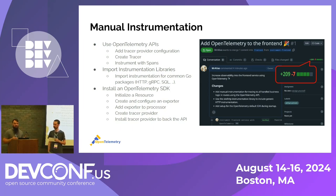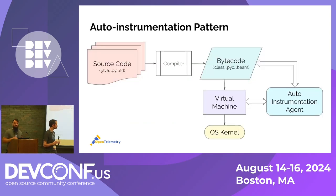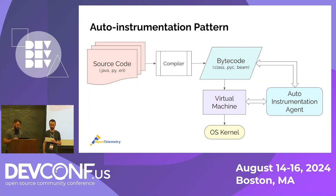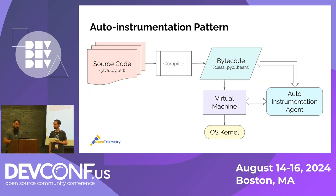So is there a better solution? We're here to talk about auto-instrumentation. To understand the generalized pattern: many languages in OpenTelemetry support automatic instrumentation. Source code is compiled into bytecode, that bytecode is run on a VM, which interfaces with the OS kernel. The auto-instrumentation agent sits along this bytecode-to-VM pathway. It automatically updates and injects the bytecode with instrumentation for functions or libraries you're interested in, and it also handles the full setup of the SDK, configuring endpoints. It provides good generic information for known libraries without any code changes.